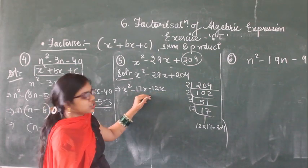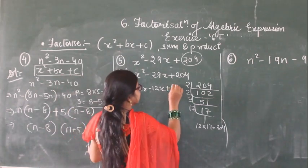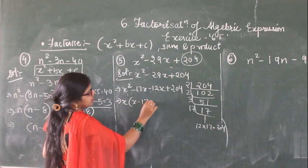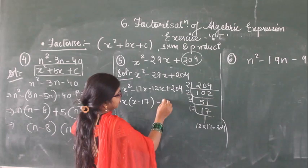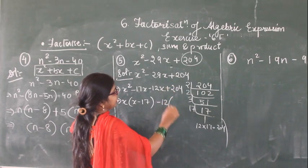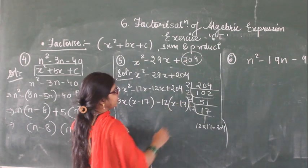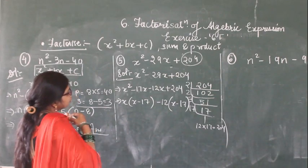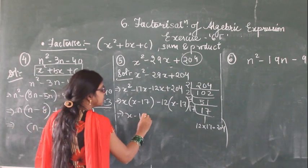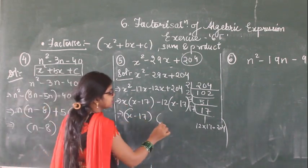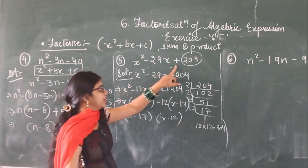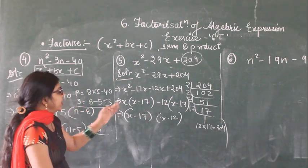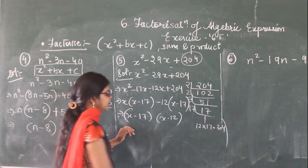So 204 remains. Now pair the terms. From x square minus 17x, take x common and you get x minus 17. From minus 12x plus 204, take out 12 common and you also get x minus 17. So x minus 17 is the common factor. So you get x minus 17 times x minus 12. So find out the factors first, then you can easily multiply or add and subtract to find the middle term. This is the answer.